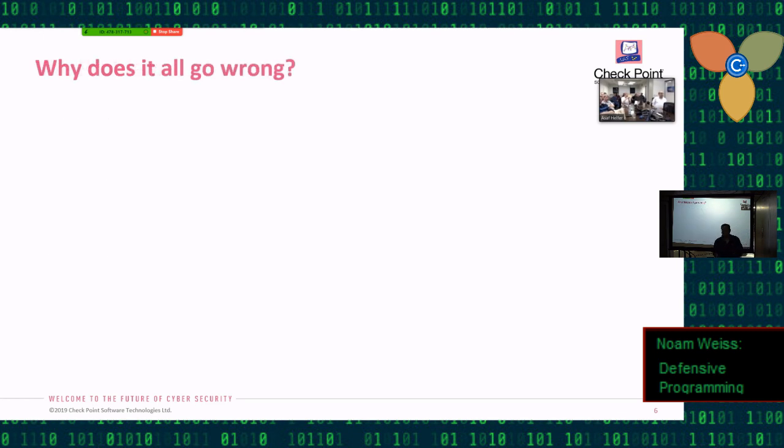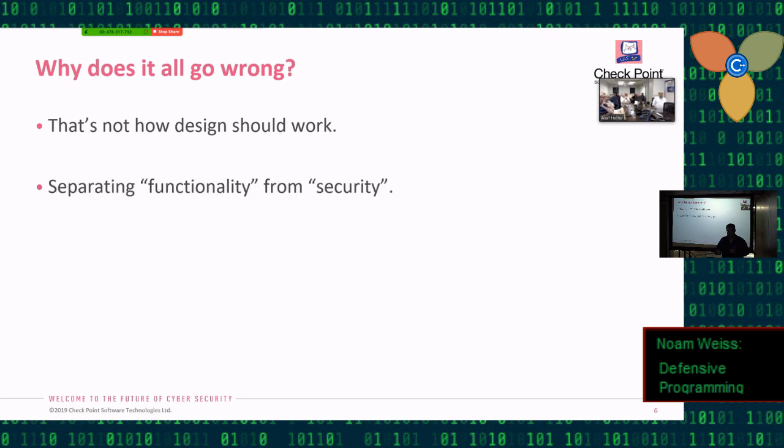So, why did it went wrong in this scenario? Well, the first thing is, that's not how design is supposed to work. First you design, then you code. You're not supposed to go, if defensive programming is part of design, you're not supposed to first complete all your code and then go back and design the defensive part of it. The second thing that went wrong is that you separated the functionality, what the code is supposed to do, from the security, making sure the code is actually correct.